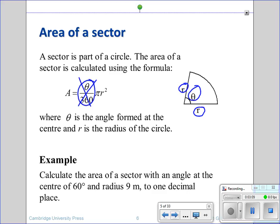In this example, we've got an angle of 60, radius of 9, and we want one decimal place.